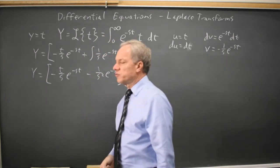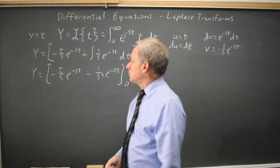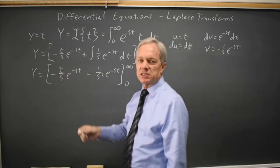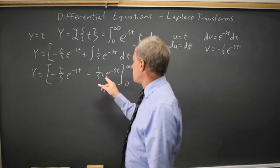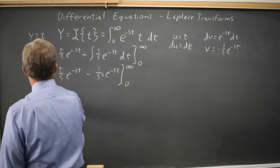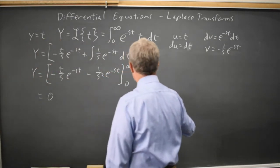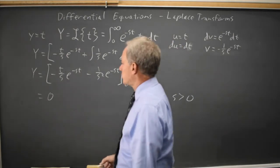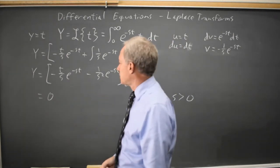As t goes to infinity, L'Hopital's rule will tell you that t over e to the positive st goes to zero, and e to the negative st goes to zero for s greater than zero. So I'm implicitly assuming that s is not negative or zero.